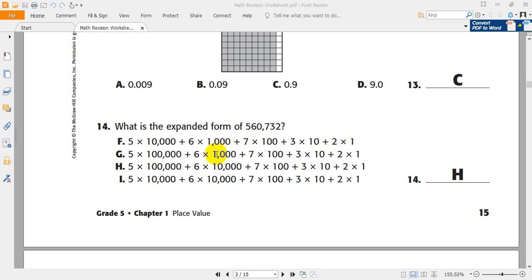It means 5 times 100 thousands, plus 6 times 10 thousands, plus 7 times 100, plus 3 times 10, plus 2 times 1. So, H is the right answer.